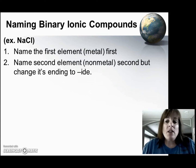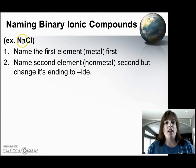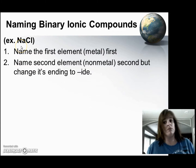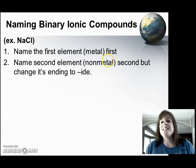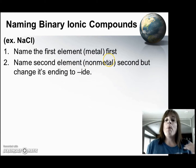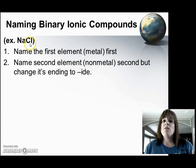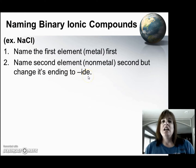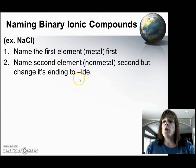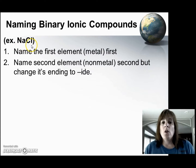For a binary compound, it's pretty simple. All we do is name that first element, which is our metal, first. So here we have sodium. Then we name the second element, which is our non-metal, second, but we change its ending. So instead of being chlorine, we change the ending to IDE. So it becomes chloride. So we have sodium chloride.